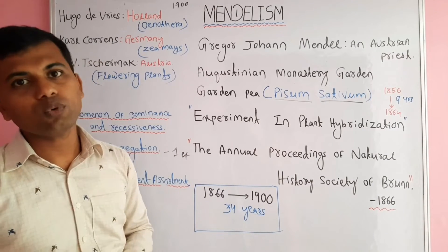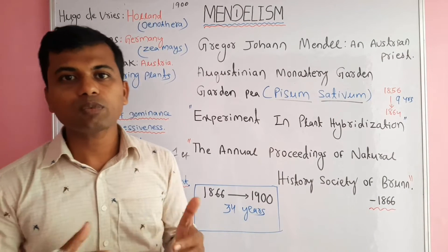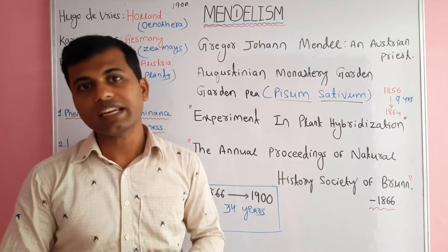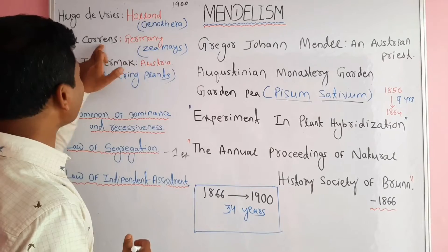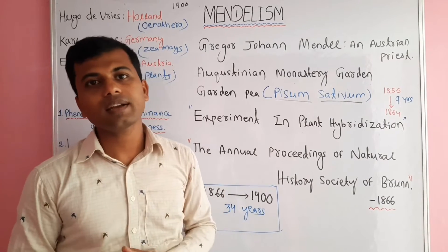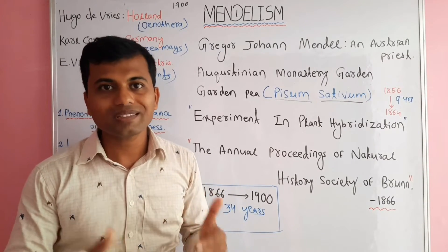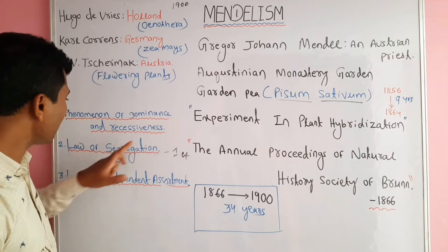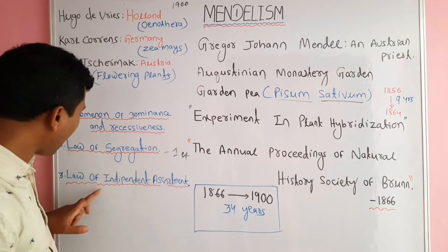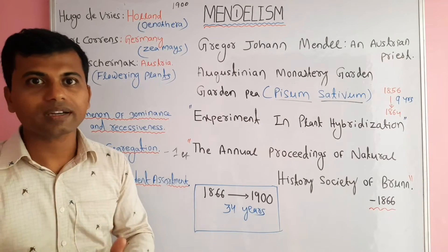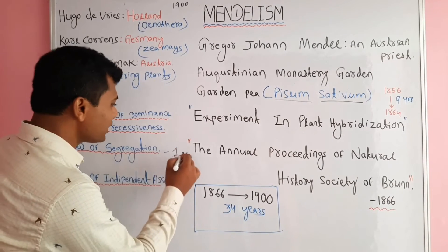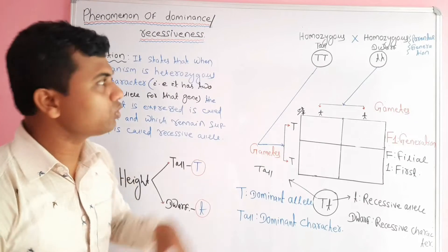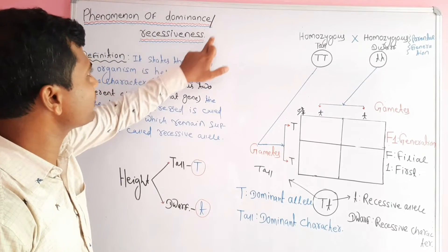In many textbooks, it is written that Mendel postulated the laws of inheritance. Actually, Mendel did not give any law. It was Carl Correns who thought that Mendel's discoveries could be presented by the phenomenon of dominance and recessiveness, the law of segregation, and the law of independent assortment. The law of segregation is considered the first law of Mendel.